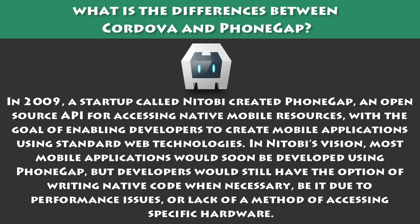In 2009, a startup called Nitobi created PhoneGap, an open source API for accessing native mobile resources, with the goal of enabling developers to create mobile applications using standard web technologies. In Nitobi's vision, most mobile applications would soon be developed using PhoneGap, but developers would still have the option of writing native code when necessary, be it due to performance issues or lack of a method of accessing specific hardware.